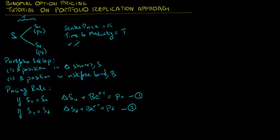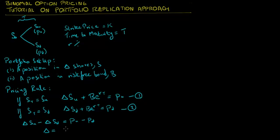Subtracting equation 2 from equation 1, we get delta times the stock price in the up state minus delta times the stock price in the down state, and this equals the payoff of the option in the up state minus the payoff of the option in the down state. Solving for delta, we get delta equals the payoff of the option in the up state minus the payoff of the option in the down state, divided by SU minus SD. Delta essentially measures the change in payoff of the option due to change in the value of the underlying.